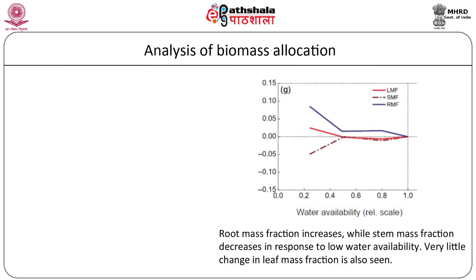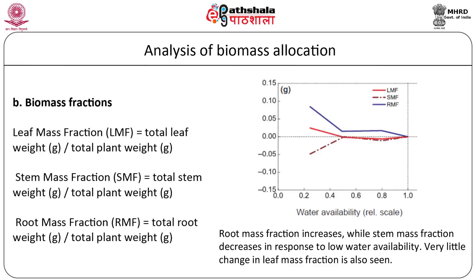The second method for studying biomass allocation is in terms of fraction of biomass allocation to leaf, stem and root, all of which add up to one. The advantage of using biomass fractions over root and shoot values is that the LMF, SMF and RMF form an integral part of the concept of growth analysis and carbon economy. Biomass fractions are also less sensitive to small changes in allocation than root and shoot ratios, especially when roots form less than 20% of the biomass. These biomass fractions — LMF, SMF and RMF — can distinguish changes in allocation under different environmental or growth conditions. For example, low water availability leads to greater allocation to root mass fraction but lower allocation to the above ground parts of the plant.